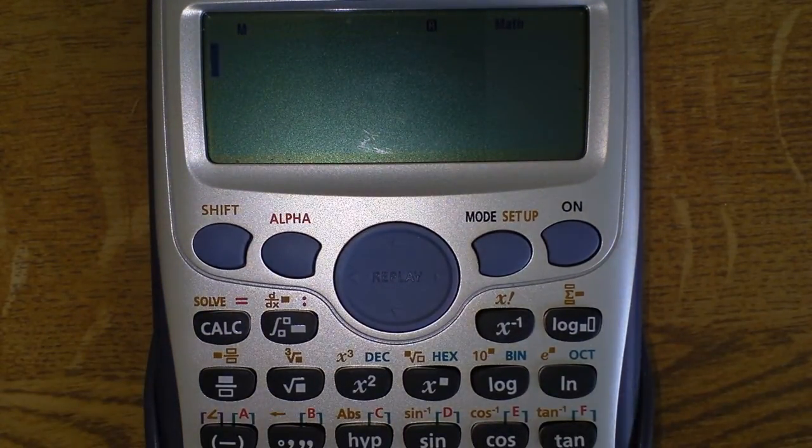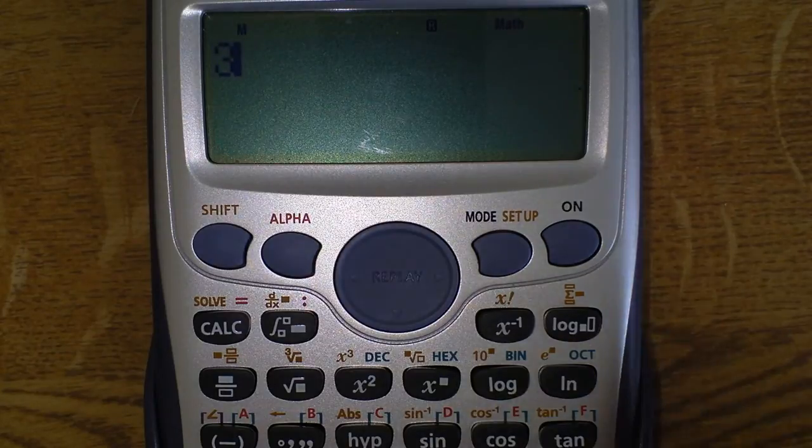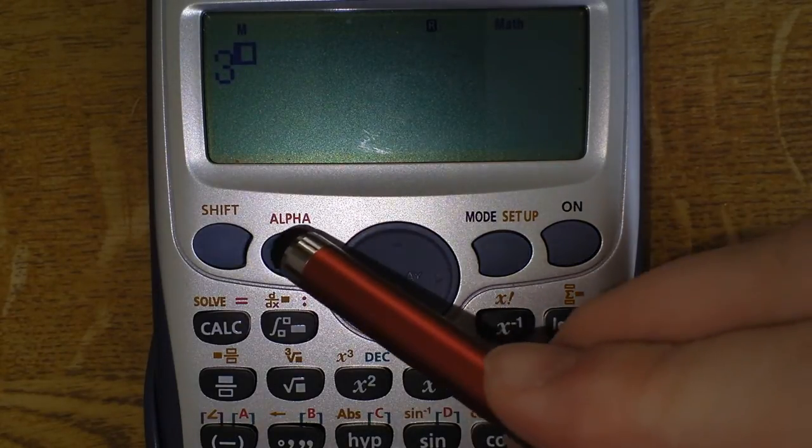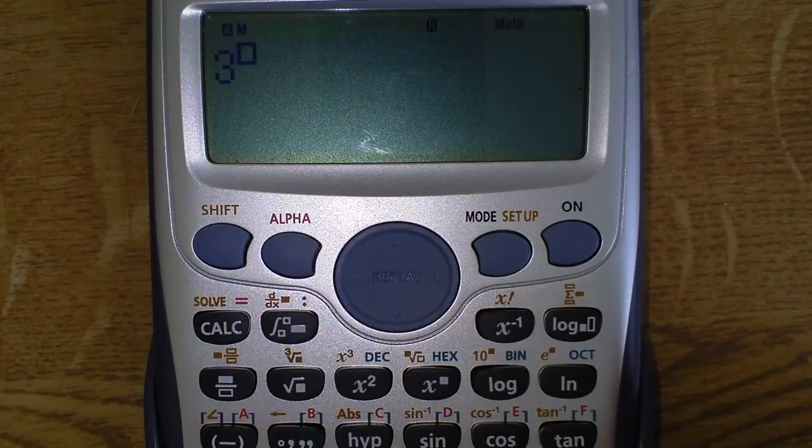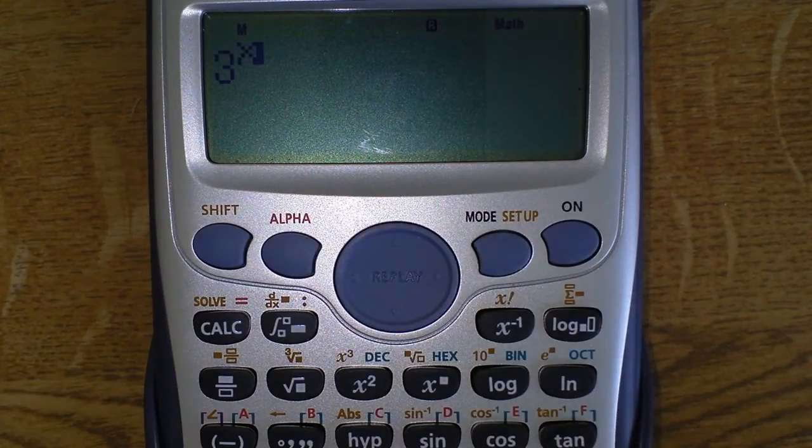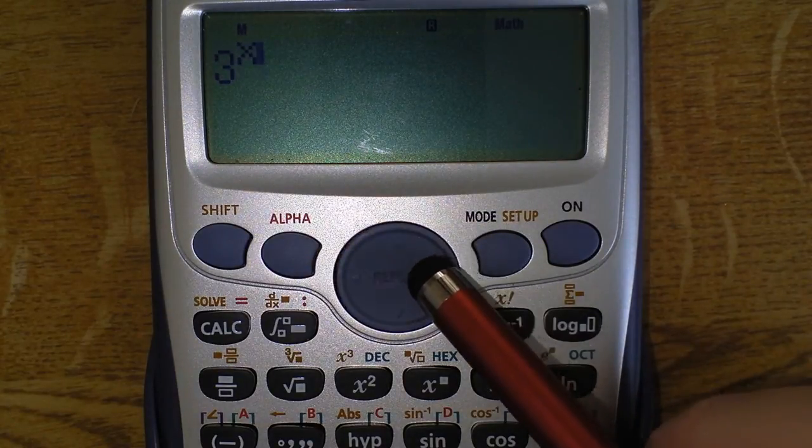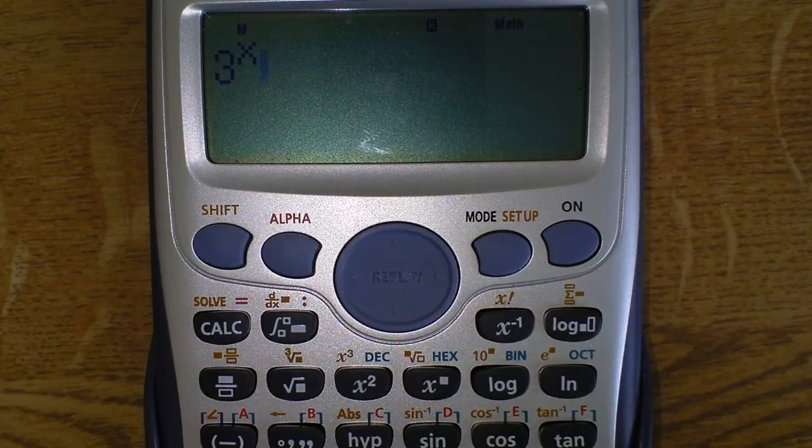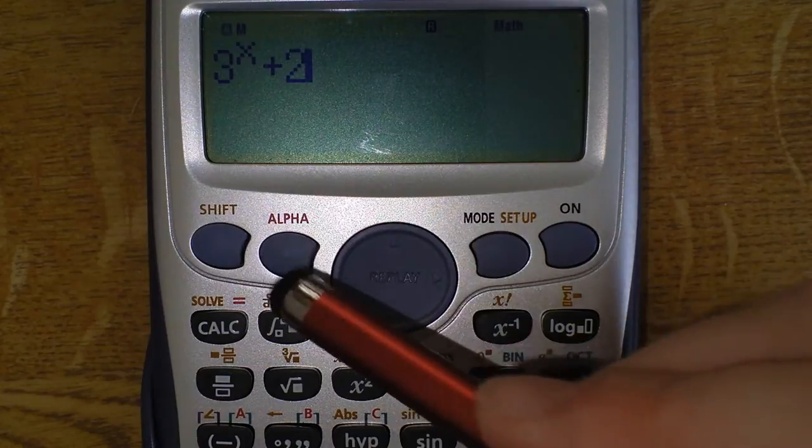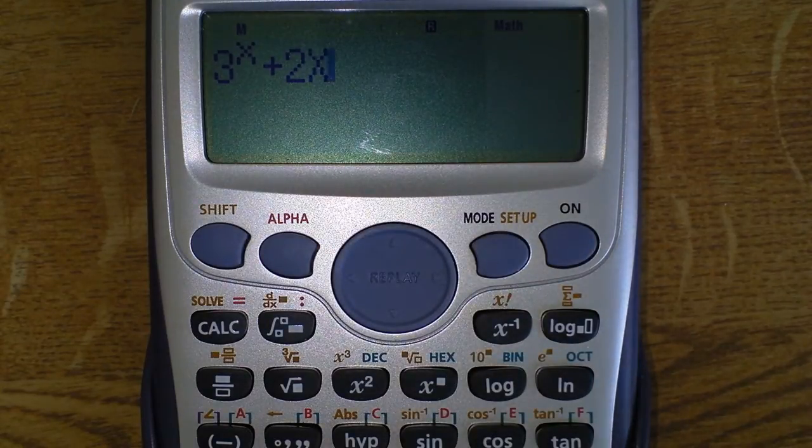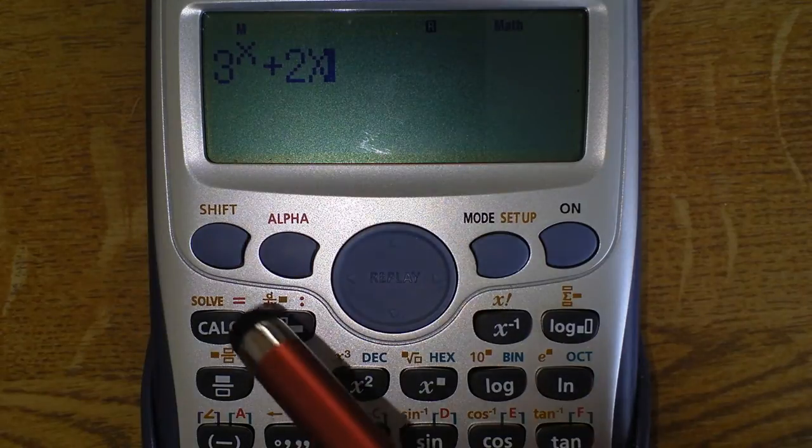Put in the equation first of all: 3 to the power of, press the alpha button and this to get the x. That's 3 to the power of x. Press the right arrow button and plus 2 and x again.